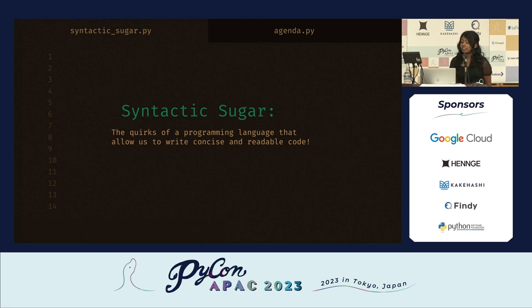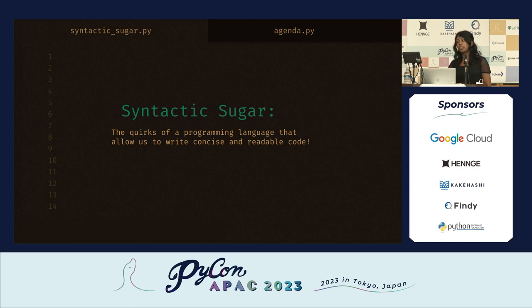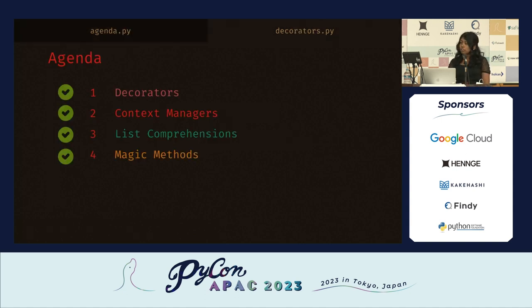Today we're going to be talking a lot about syntactic sugar. I like to think of syntactic sugar as the quirks of a programming language that allow us to write concise and readable code. Most programming languages have some version of syntactic sugar, and fortunately for us, Python has a lot. Today we're going to be talking about four concepts in Python: decorators, context managers, list comprehensions, and magic methods.